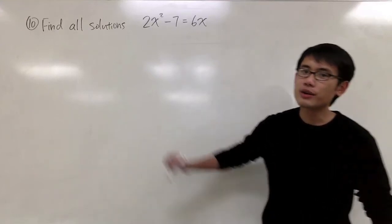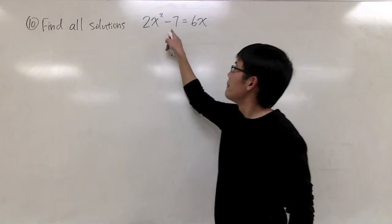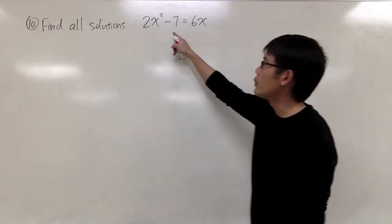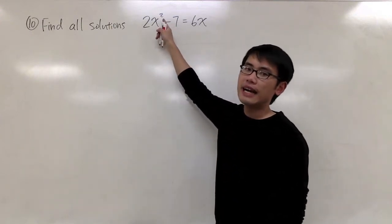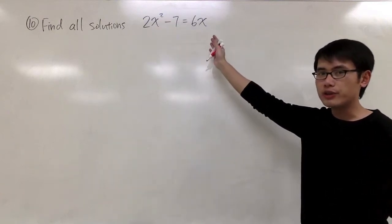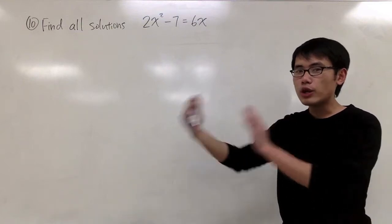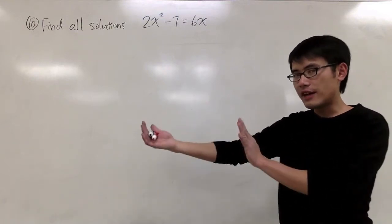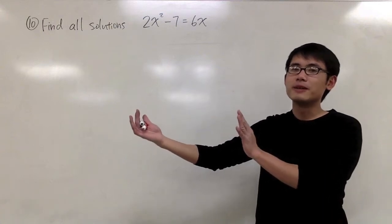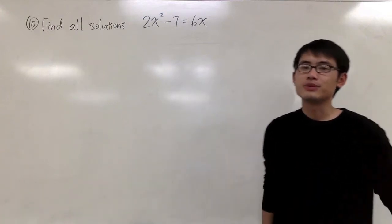For question number 10, we are going to solve this quadratic equation: 2x squared minus 7 is equal to 6x. Notice that we have x to the second power — that's the highest power of x in this equation. To deal with the quadratic equation, we shall first make one side equal to 0 and then try to factor the other. If it's not factorable, we will use the quadratic formula or the completing the square technique.